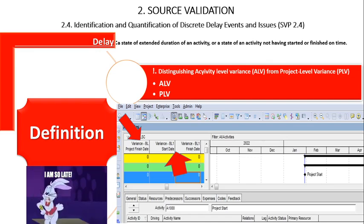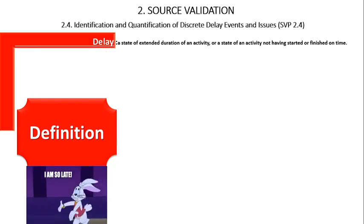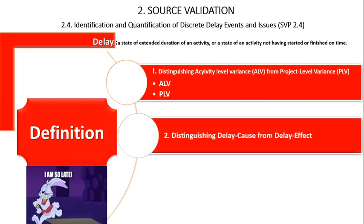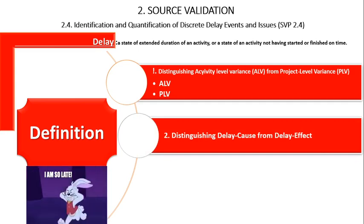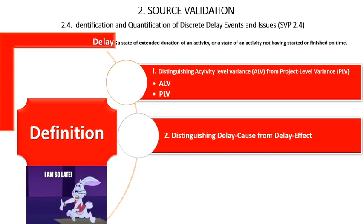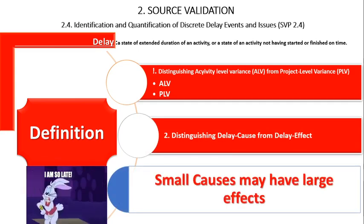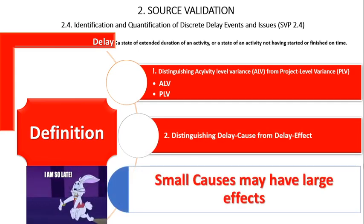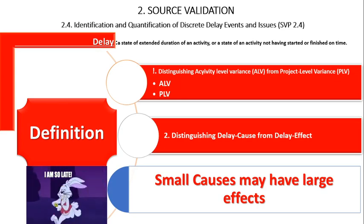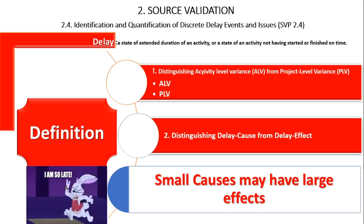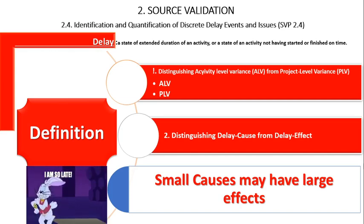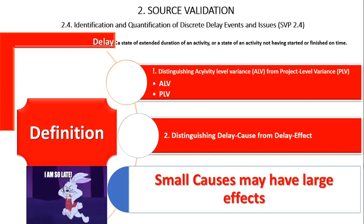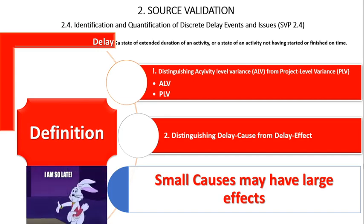The second point is distinguishing delay cause from delay effect. It is important for the analyst to be able to distinguish the cause of delay from the resulting effect. For example, a fully updated schedule may show extended activities and delayed start of activities relative to their controlling predecessors. While the cause may not be apparent, a competent statusing of the schedule will show the delay effects.